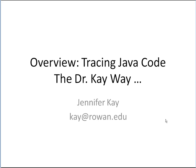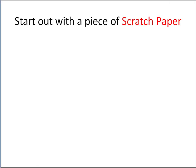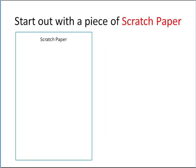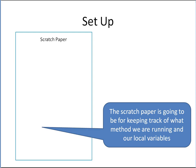I want to try and give you an overview of how I trace Java code. We're going to start out with a piece of scratch paper, and the scratch paper is going to be for keeping track of the methods that we're running and our local variables — so we'll know what method we're running, where are we in that method, and what are our local variables.